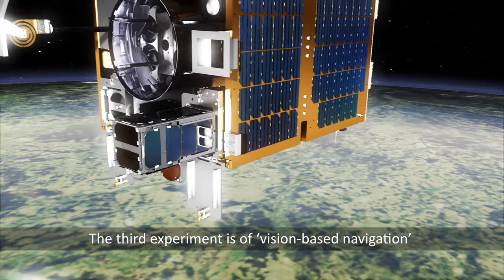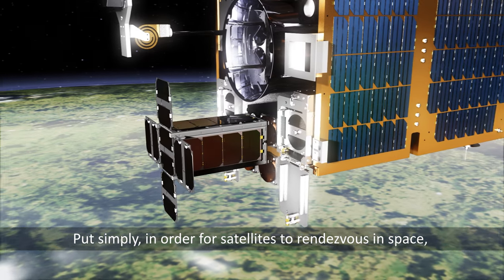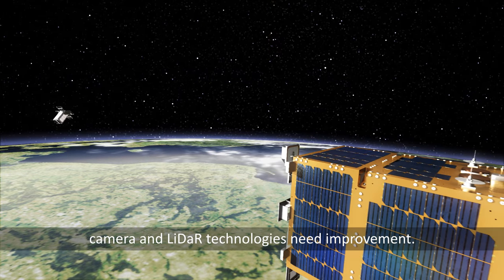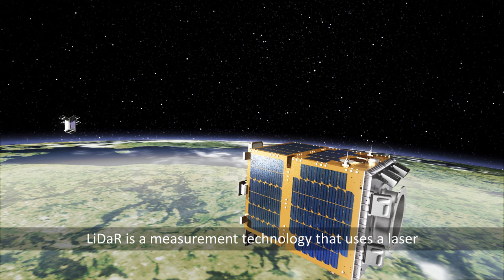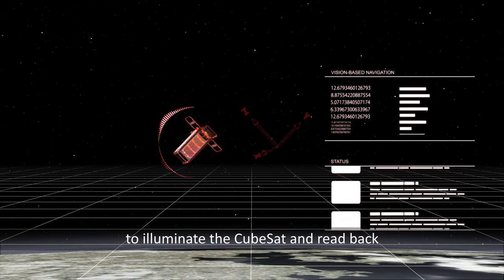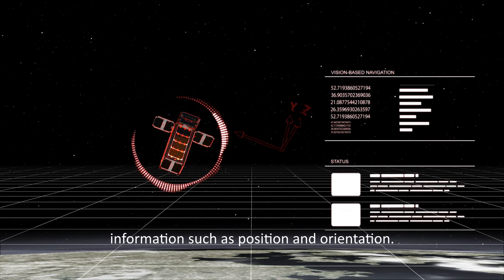The third experiment is vision-based navigation and will also use an ejected CubeSat. Put simply, in order for satellites to rendezvous in space, camera and LiDAR technologies need improvement. LiDAR is a measurement technology that uses a laser to illuminate the CubeSat and read back information such as position and orientation.